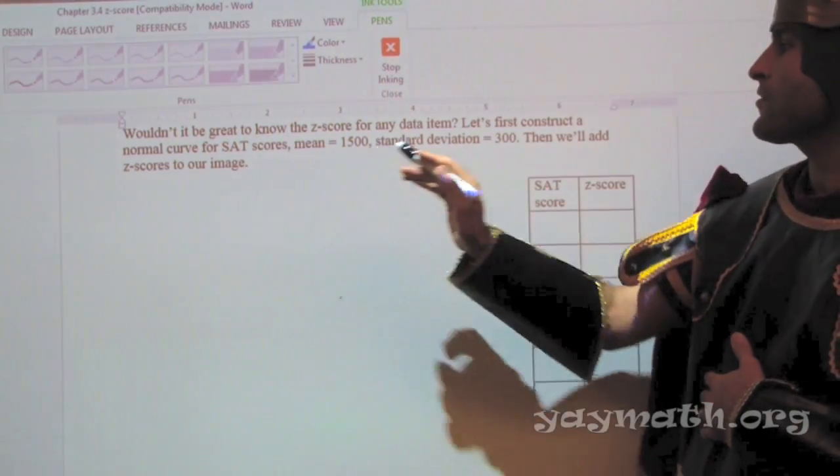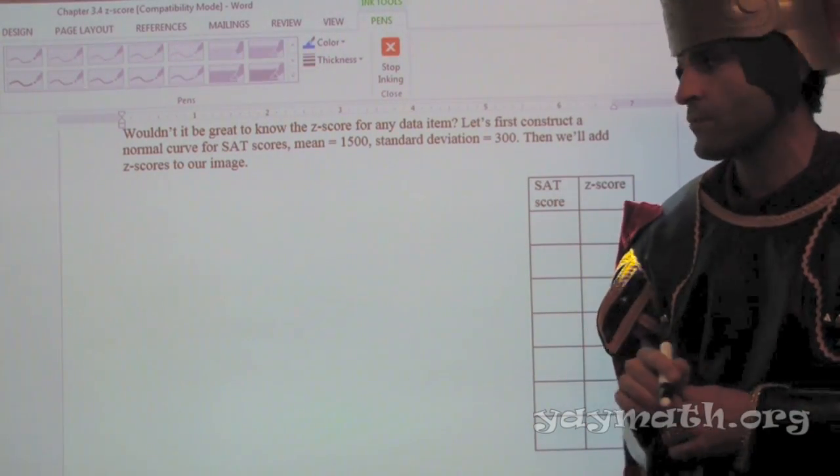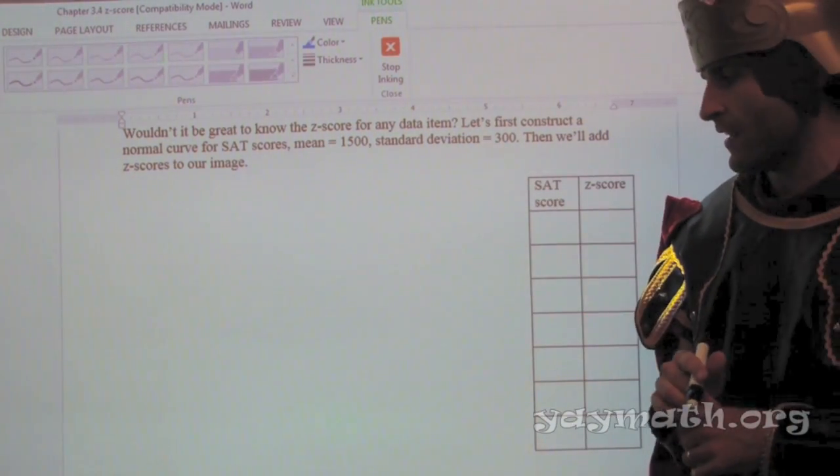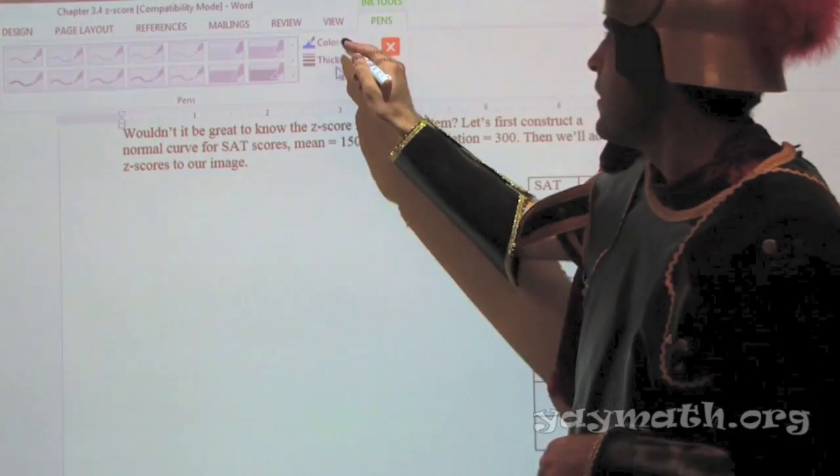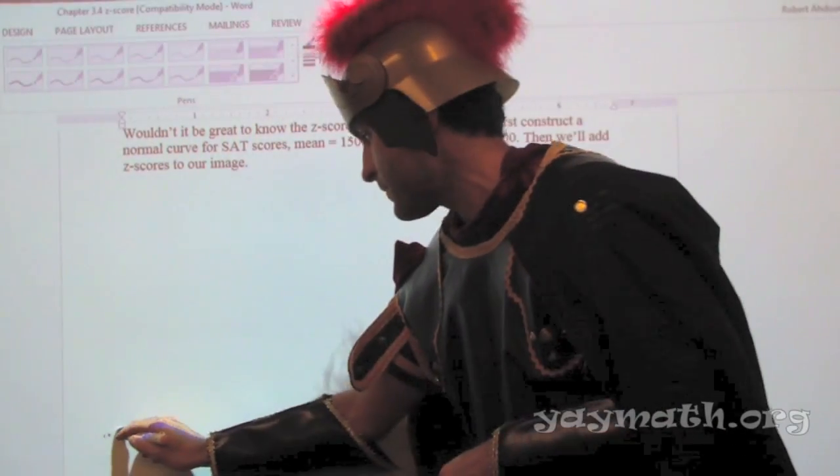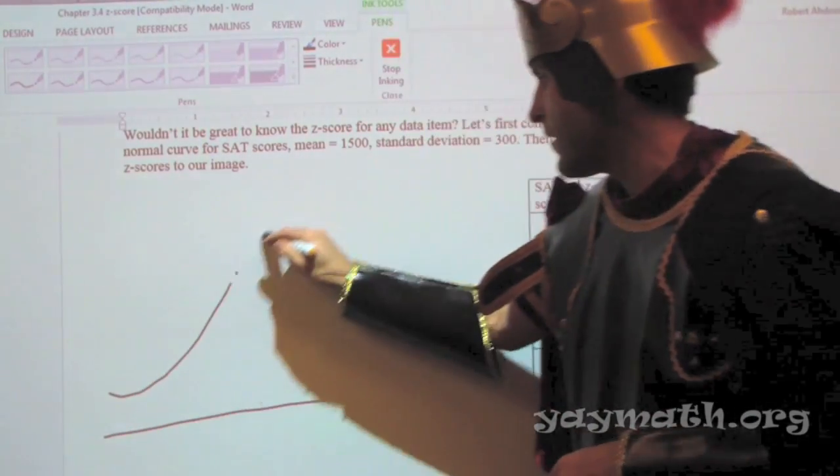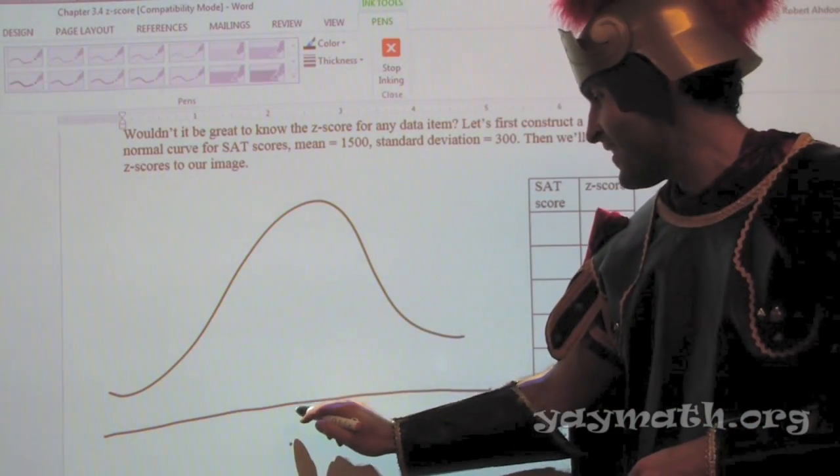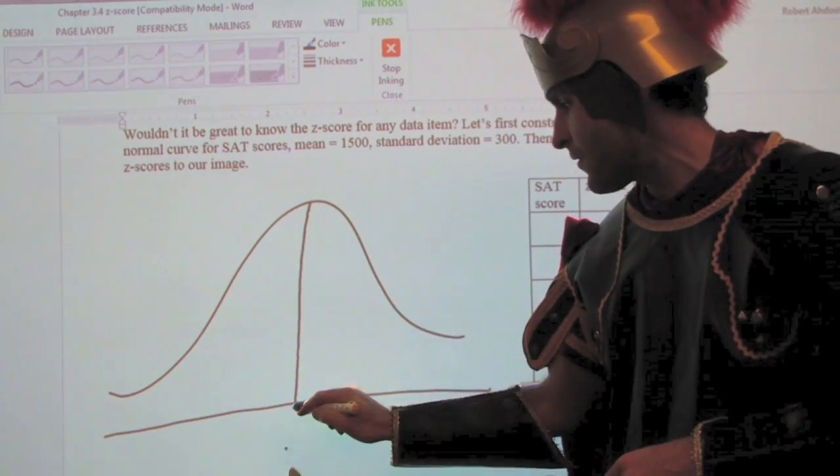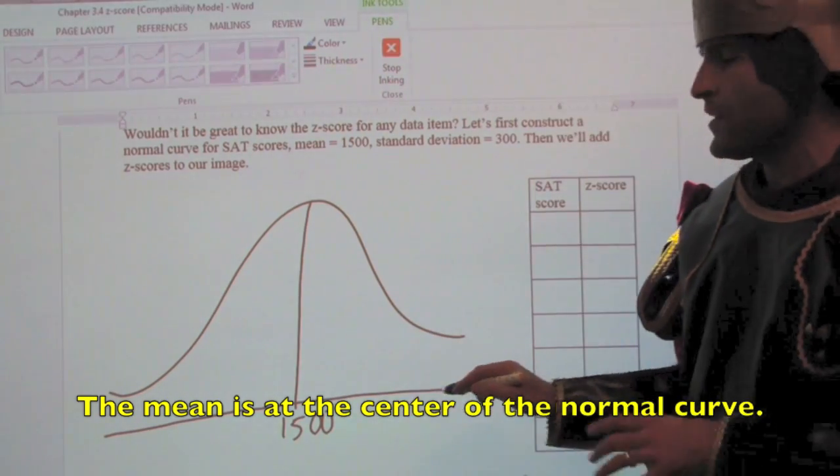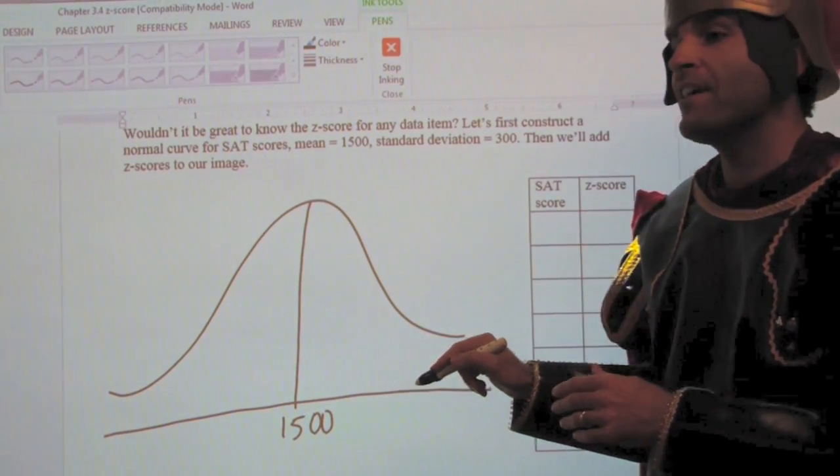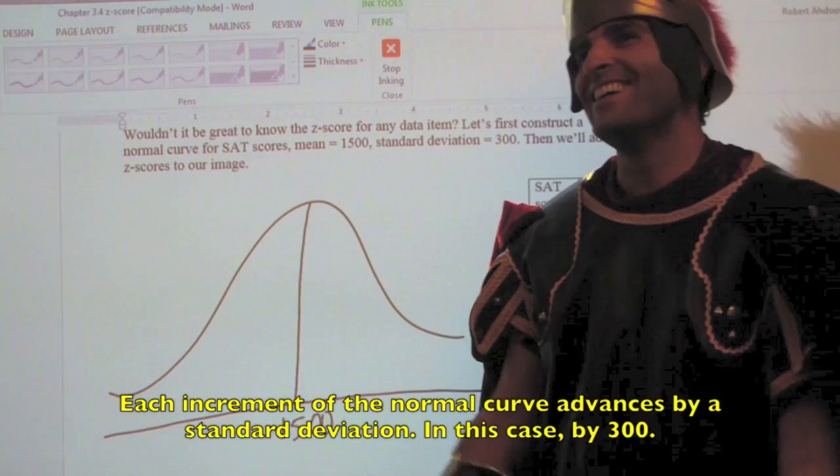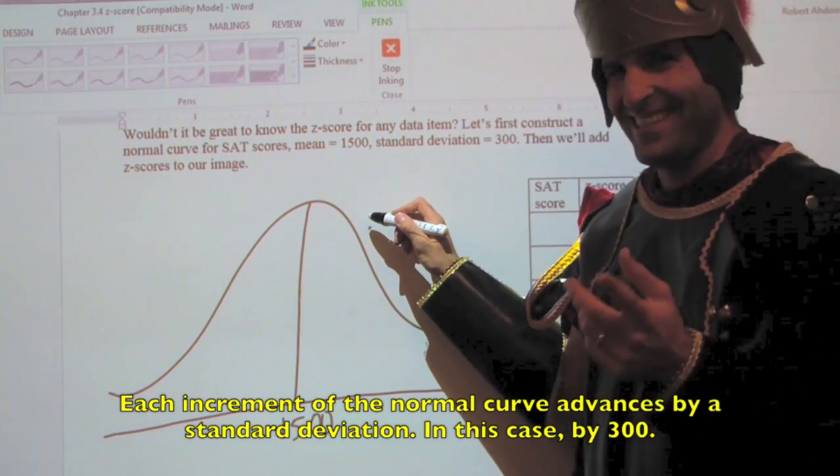We have a mean of 1500 and a standard deviation of 300 for SAT scores. So could we please create a normal curve with our percentages given this data? All right, so feel free to do it on your papers as well. I'll start in black and let's do it together. All right, so here we are. There's my normal curve, although this moment is far from normal.